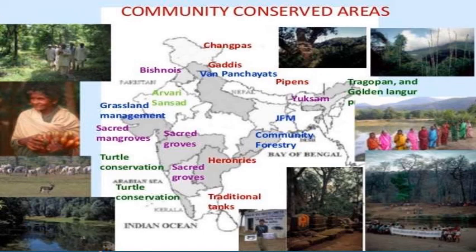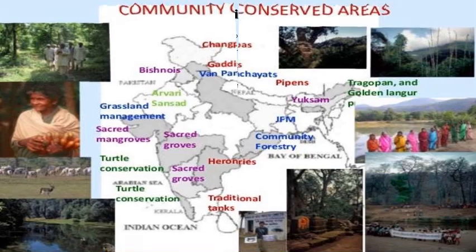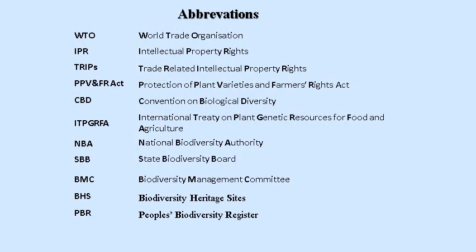This picture shows the community-conserved areas of India. India has a large range of indigenous and community-conserved areas, which actually act as buffer zones, connectors, or migration corridors between national parks, wildlife sanctuaries, and reserved and protected forests of India.